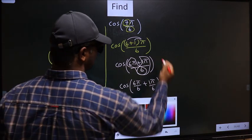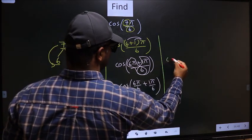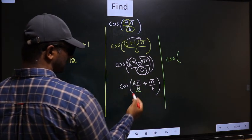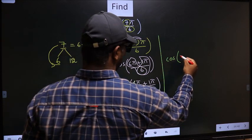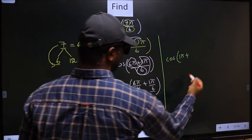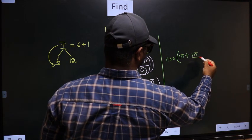Next, cos. Now here you should cancel 6. We get 1π plus this, no change, 1π by 6.